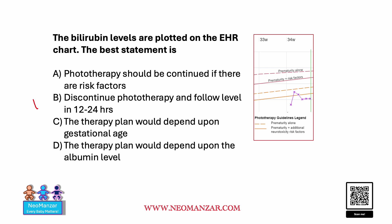The correct answer here is we can discontinue phototherapy and follow the level in 12 to 24 hours. The reason is the last three bilirubin levels are below the curve given for the risk factors. So even if there are risk factors, you can stop phototherapy.